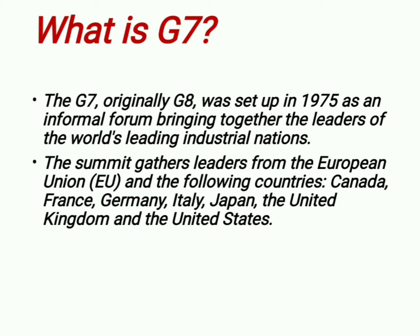What is G7? The G7, originally G8, was set up in 1975 as an informal forum bringing together the leaders of the world's leading industrial nations. The summit gathers leaders from the European Union and the following countries: Canada, France, Germany, Italy, Japan, the United Kingdom, and the United States.